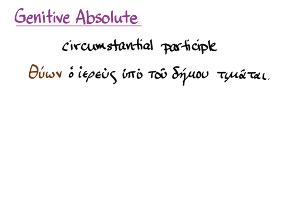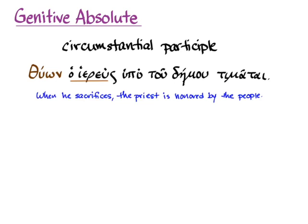To learn about the genitive absolute, let's remember a little bit about circumstantial participles, because the genitive absolute is really a specialized version of a circumstantial participle. When we've done them before, the participle here in brown agrees with whatever noun in the sentence is doing that participle. So here that nominative singular participle is agreeing with the priest, and the sentence means 'when he sacrifices, the priest is honored by the people.'